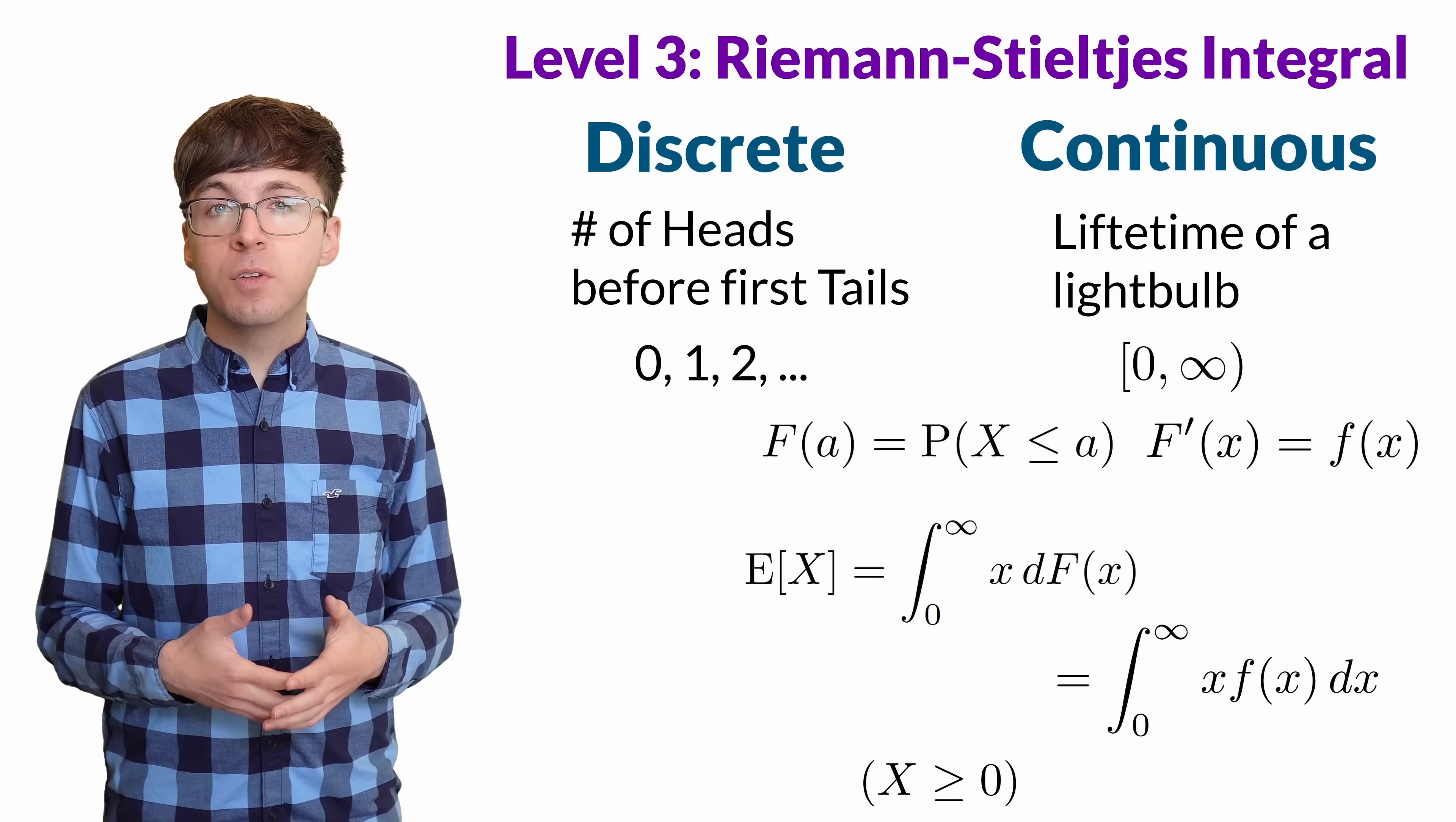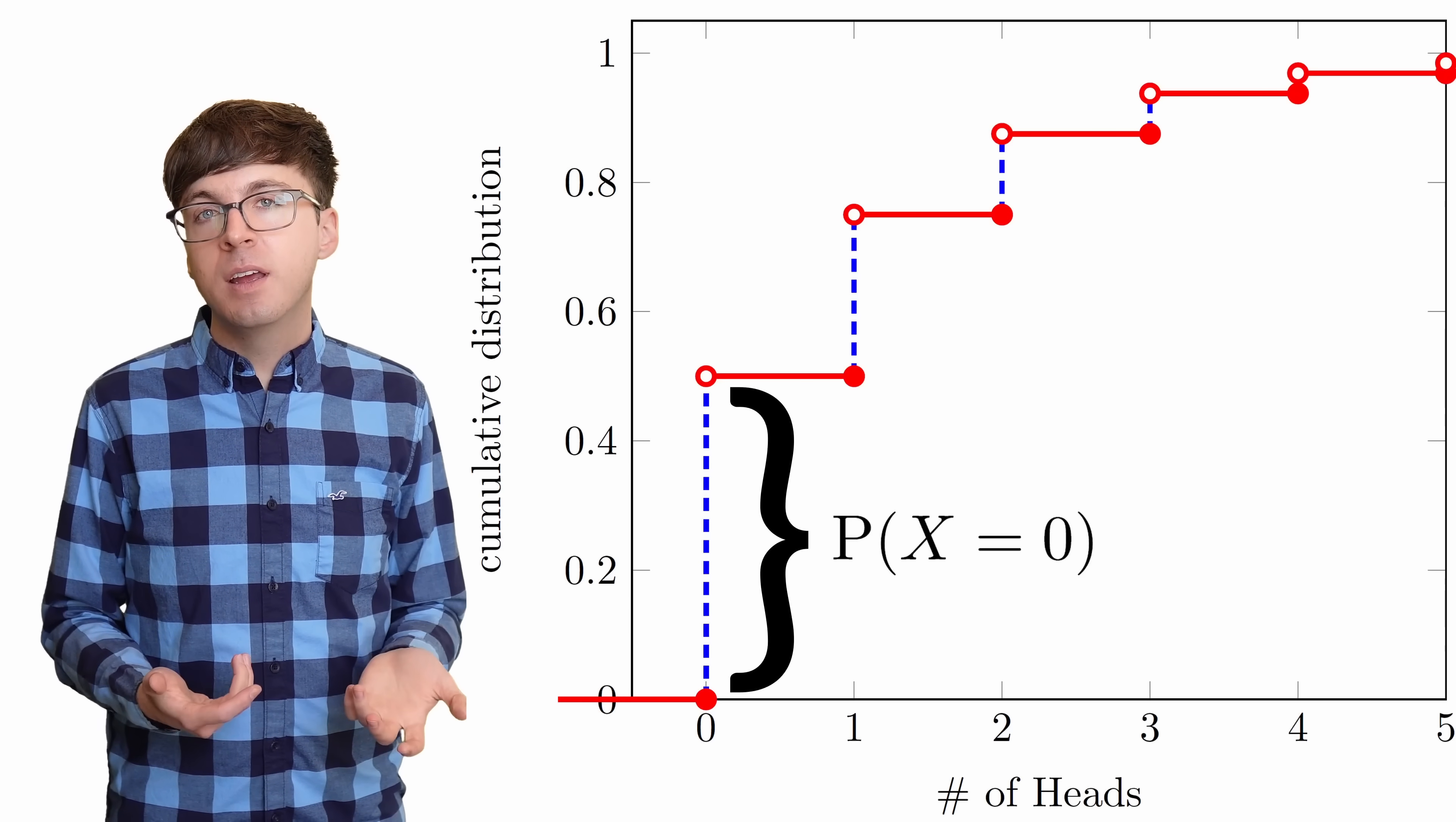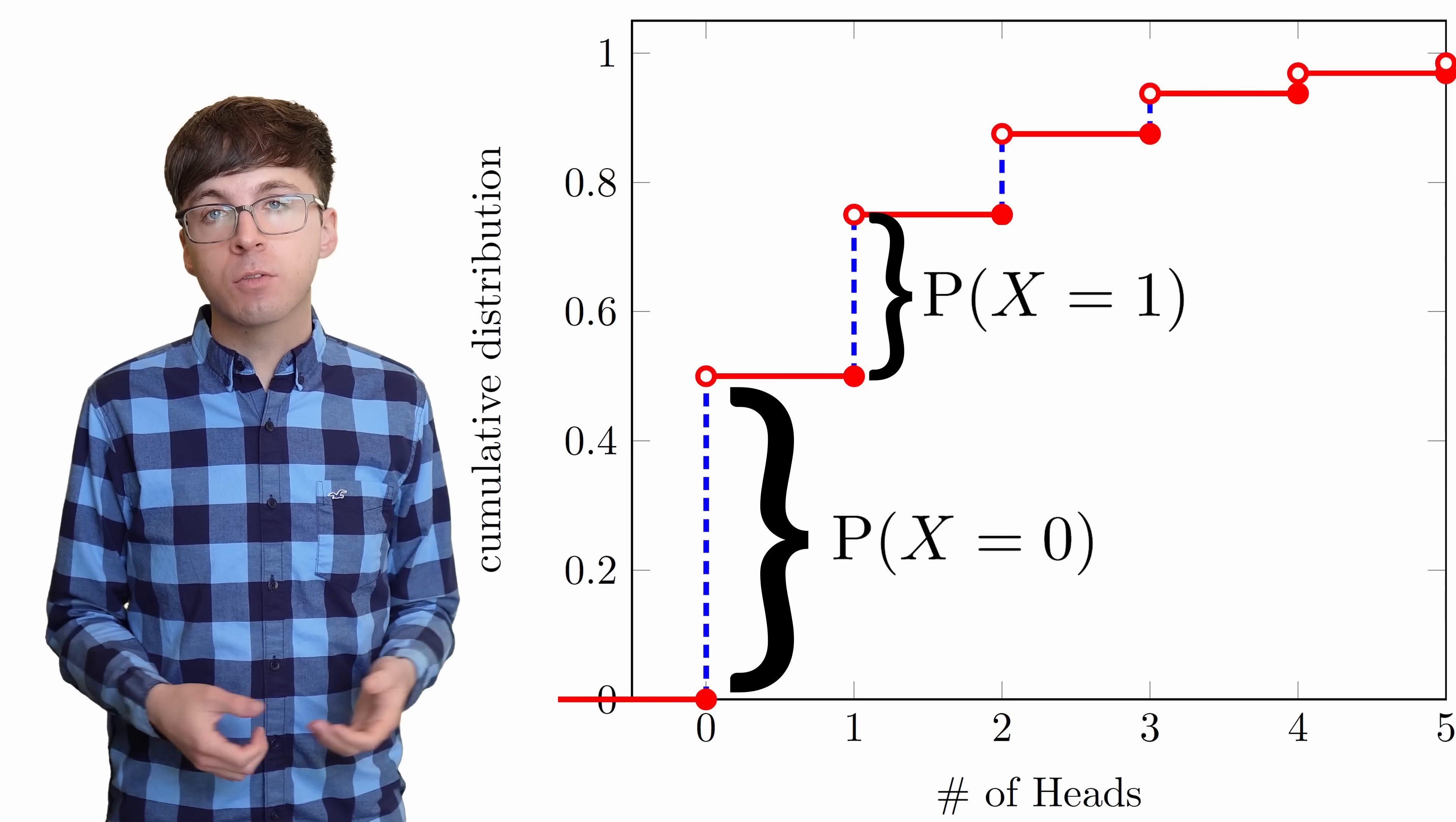But for a discrete random variable, the CDF has jumps. There's a positive probability that x is equal to 0, so the CDF jumps by that amount at 0. And there's another jump at 1 by the probability that x equals 1.